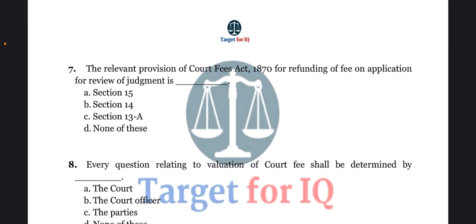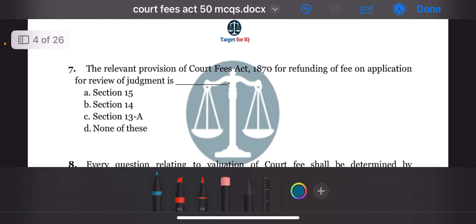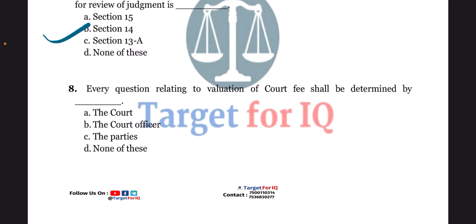Next question: the relevant provision of this act for refunding of fee on application for review of judgment is dash. The options are A. Section 15, B. Section 14, C. Section 13, or D. None of these. The correct answer is option B. Section 14.